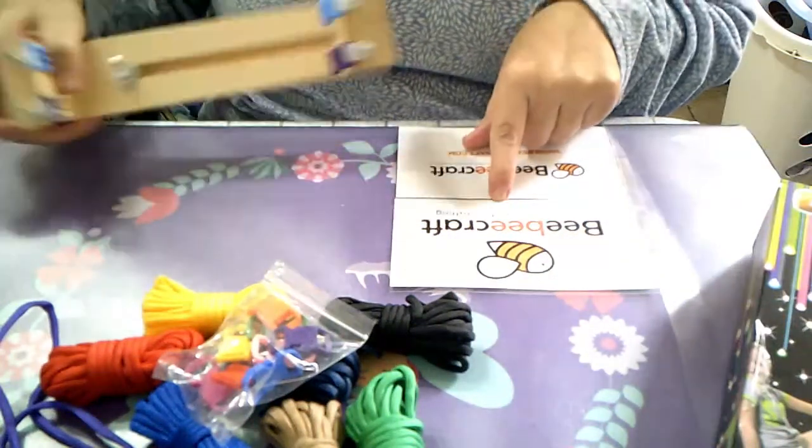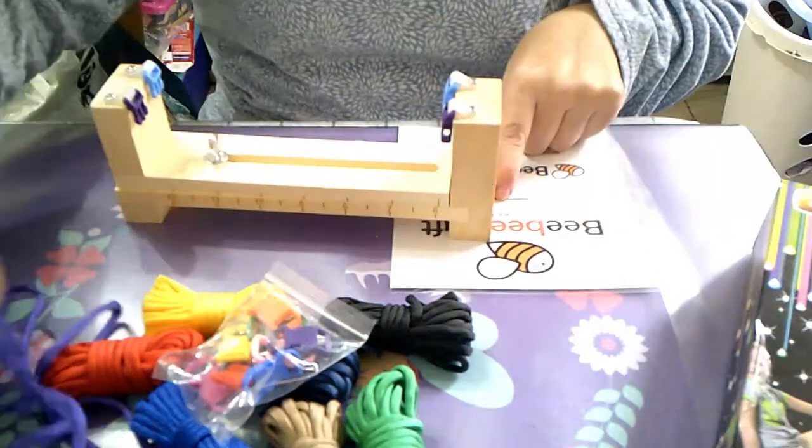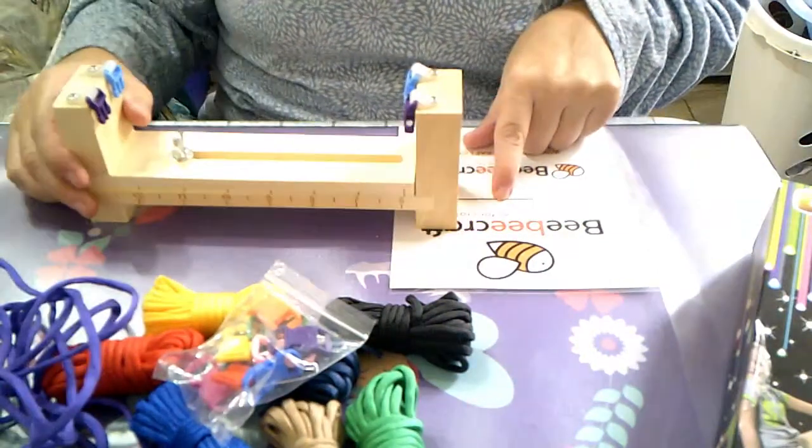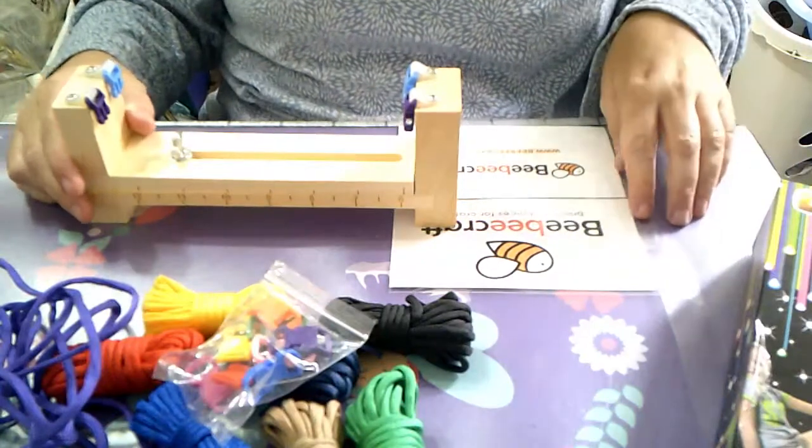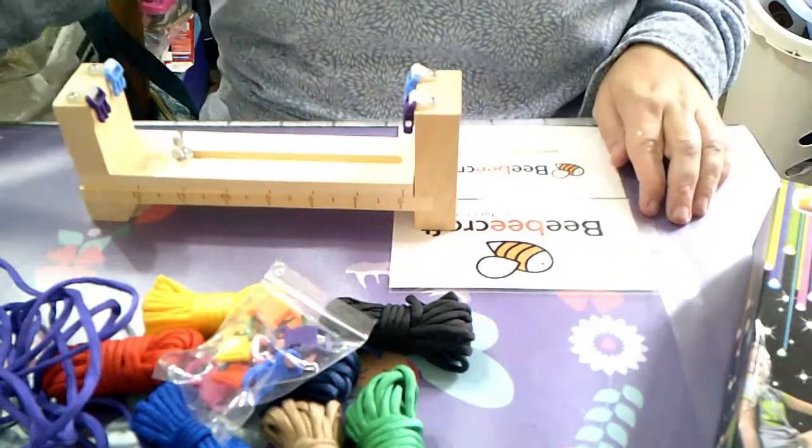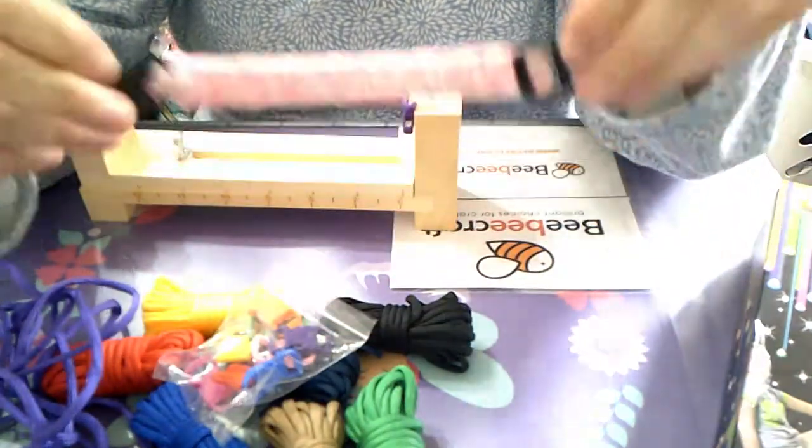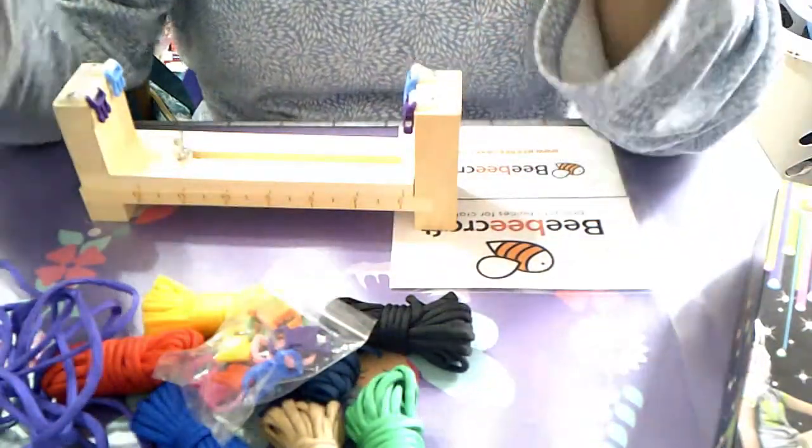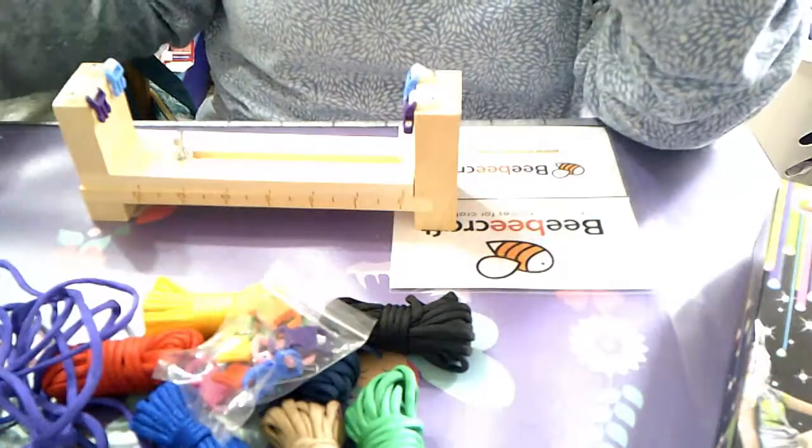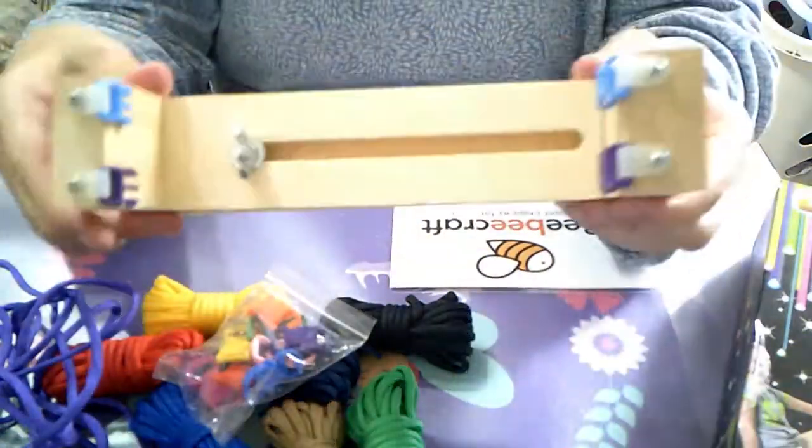Como veréis, aquí el primer tutorial de Vivica de la segunda colaboración. Vamos a hacer una pulsera como esta de paracord. Esta se la hice a mi hija, pero esta se la hice sin telar.